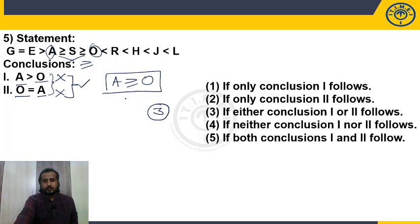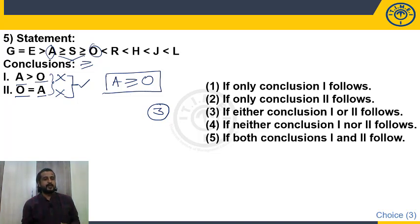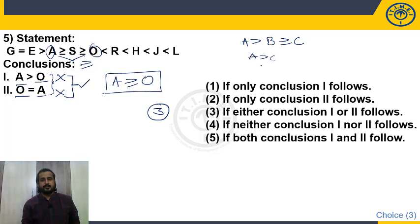Be careful: most students blindly choose 'either or' whenever they see the same terms. That is not always correct. To get 'either or,' the terms must be the same — but even that is not sufficient by itself. Example: A > B and B ≥ C. Conclusions: A > C and A = C. Though the terms A and C appear in both, the definite conclusion is A > C, so choose only that — not either or. So having the same terms does not automatically mean 'either or.' Answer for question 5 is choice 3.